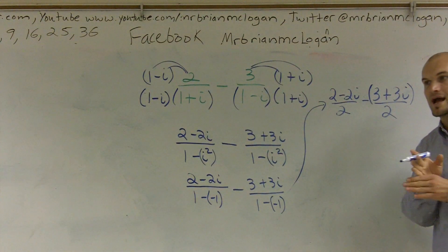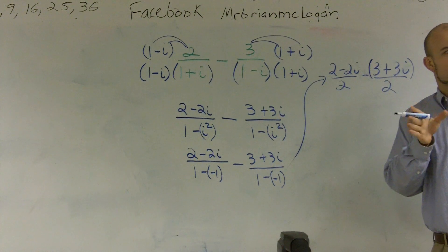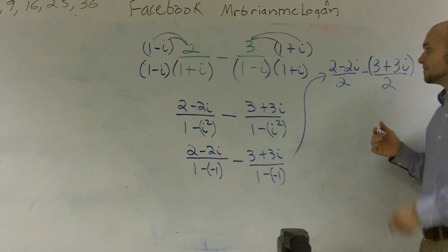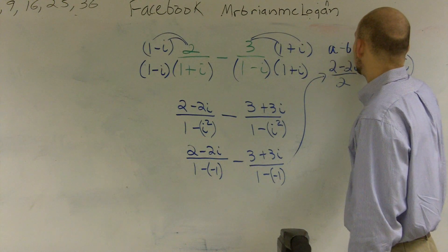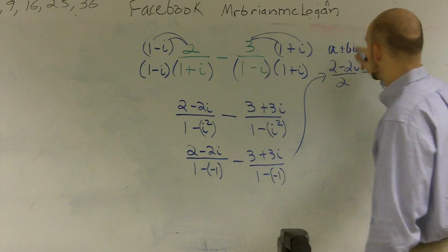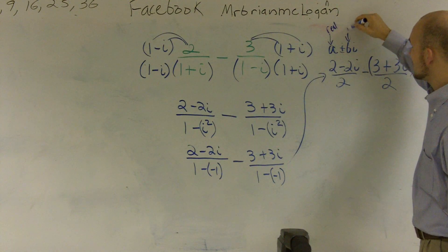And remember when we subtract or add complex numbers, you always subtract or add the real from the real and the imaginary from the imaginary. So remember it's a plus or minus bi. That's your real. And this is our imaginary.